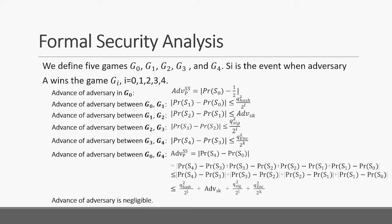To give a formal security analysis of our protocol suite, we use the Dolev-Yao adversary model to prove the security. We define five games G0 to G4. SI is the event where the adversary wins game GI. We gave the advantage of the adversary in G0 and the differences in each two neighboring games. Finally, we calculate the advantage of adversary between G0 and G4, which is negligible. So we conclude that the advantage of the adversary to break the protocol security is negligible, and our protocol is provably secure.